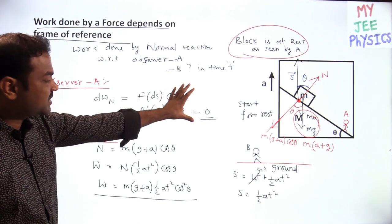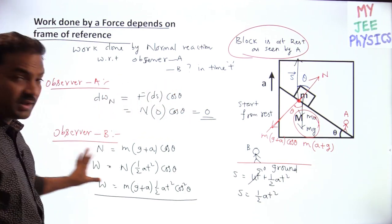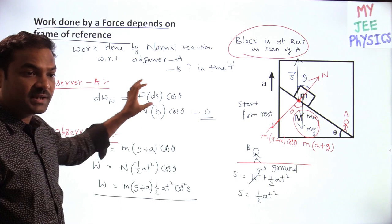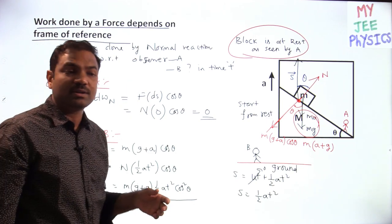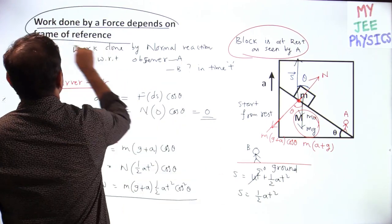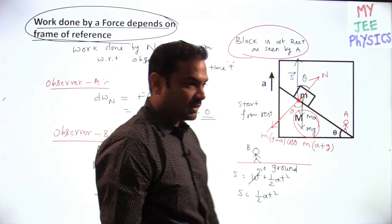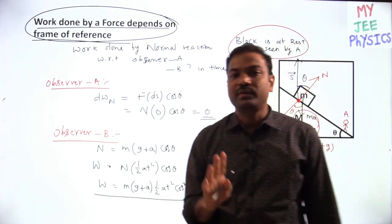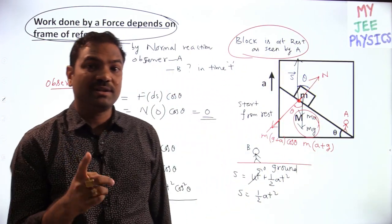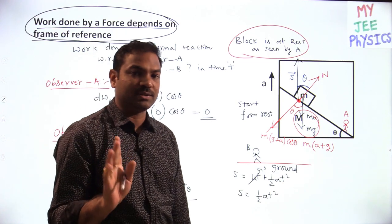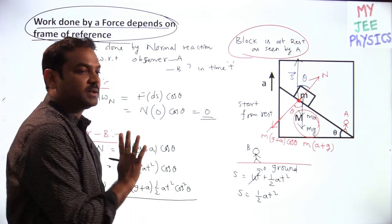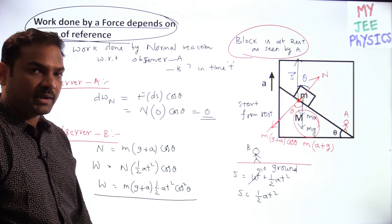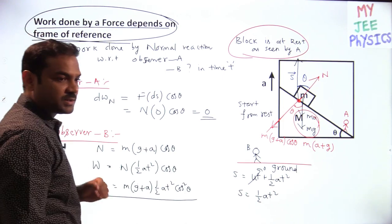So the work done by observer A is different from the work done by observer B. These two work done values differ because: work done by any force depends on the frame of reference. As the frame of reference changes, displacement changes, and as displacement changes, the work done will differ.